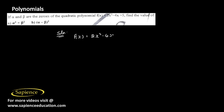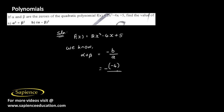We have the polynomial f(x) = 2x² - 4x + 5. From the relation between the zeros and the coefficients, the sum of the zeros equals minus the coefficient of x divided by the coefficient of x². Here, minus coefficient of x is -4 and coefficient of x² is 2, so the sum of zeros α + β = 4/2 = 2.